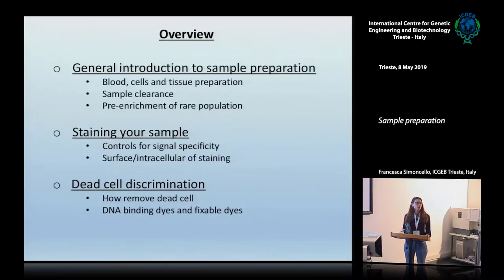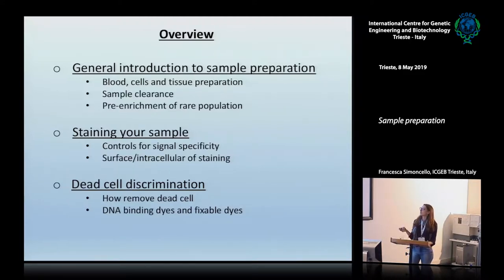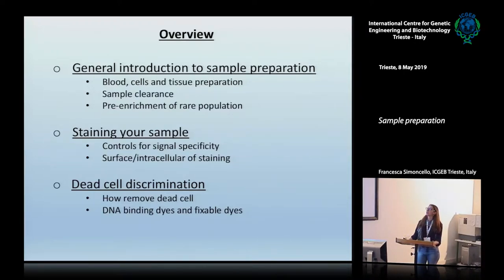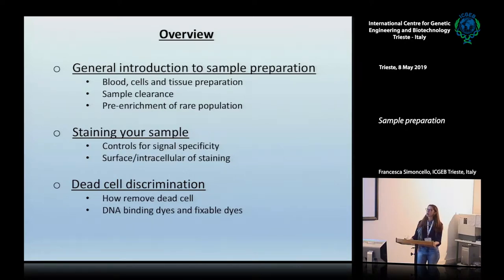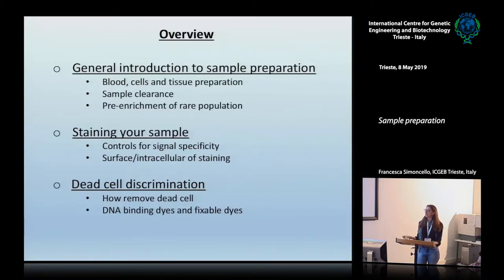I would like to start with an overview. I will speak about the general introduction to sample preparation, I will show you how to prepare blood cells or tissue — different types of tissue. I will speak about sample clearance and about the re-enrichment of a rare population. Then I will go through staining considerations, so I will speak about controls for staining specificity and I will talk about different types of staining. The last point of this talk is about dead cell discrimination, so I will speak about how to physically remove the dead cells or how to discriminate them during the analysis.